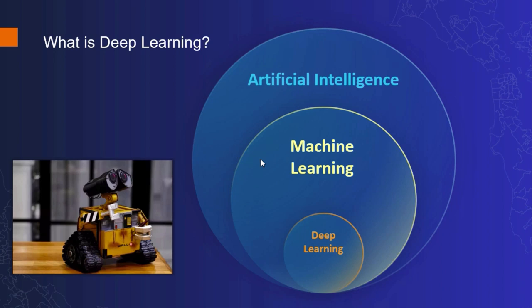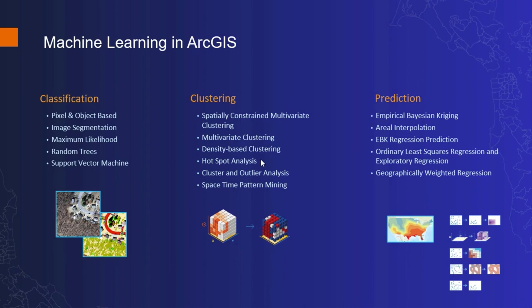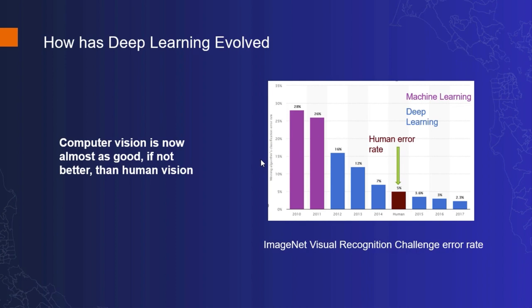Deep learning is just one type of machine learning that is inspired by the human brain. In the context of ArcGIS, machine learning has been used for a while in various tools — for example, in clustering, image segmentation, and predictive analysis. Computer vision is now almost as good, if not better, than human vision in most imagery tasks. The chart on the right shows how the error rate of image recognition on ImageNet has been going down year on year. Since deep learning took over, computers have gotten significantly better at recognizing images compared to humans. Now let's see how deep learning integrates with ArcGIS.